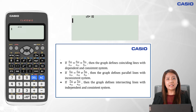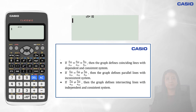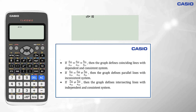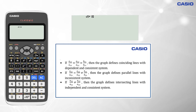A graph of intersecting lines has one solution with a consistent system and independent equations. A graph of coinciding lines has infinite solutions with a consistent and dependent system. If the ratios of the coefficient of x, the coefficient of y, and the constant terms are all equal, then the graph defines coinciding lines with a dependent and consistent system. If the ratios of the coefficient of x and the coefficient of y are equal, but the ratio of the constant terms is not equal to the other two ratios, then the graph defines parallel lines with an inconsistent system.